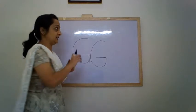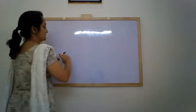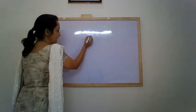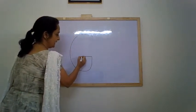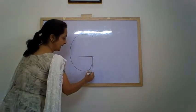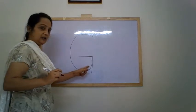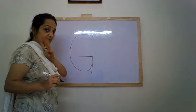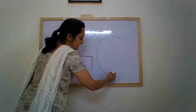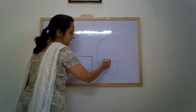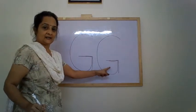Let us erase this and write it one more time. A big backward curve. Go up. In. Out. Down. Letter G. Backward curve, sleeping line, standing line — three patterns. A big backward curve, go up, in, out, down. This is letter G.